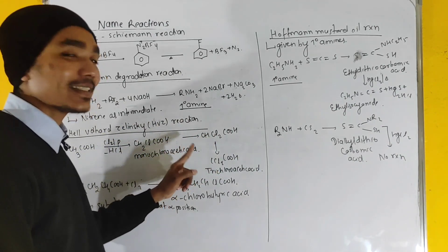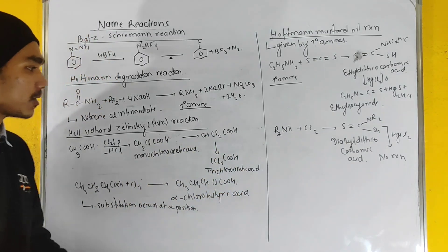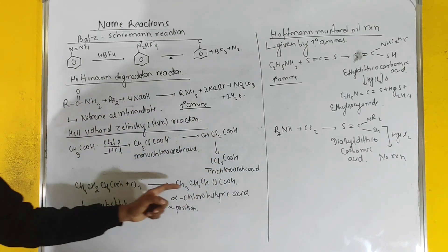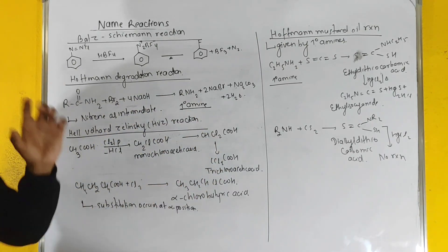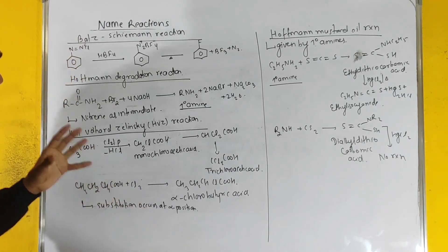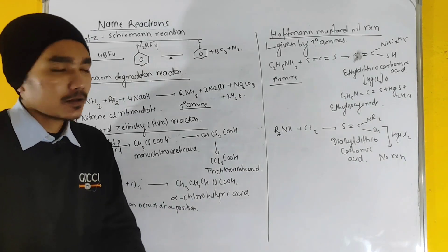The Hell-Volhard-Zelinsky reaction involves halogenation at alpha position. Substitution occurs at alpha position using this reaction to form monochloroacetic acid, dichloroacetic acid, and trichloroacetic acid.